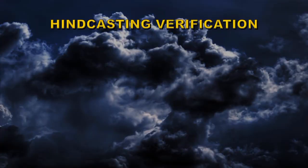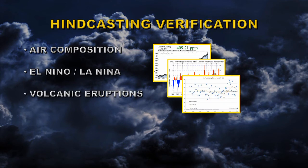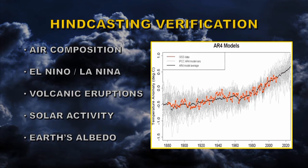So how do you verify that you have the right physics in the models? Well, one way of doing this is hindcasting, which is where you take the historical record of various parameters that affect climate — like the air composition of the atmosphere, the El Niño–La Niña cycles, volcanic eruptions, solar activity, the Earth's albedo, and of course many more factors — feed those into the models, and see whether they reproduce the observed temperatures. The gray here is the output of many different models, the black line is the average of those, and you can see when you compare it with the data shown in red that there's very, very good agreement. That basically says the models have the physics right.